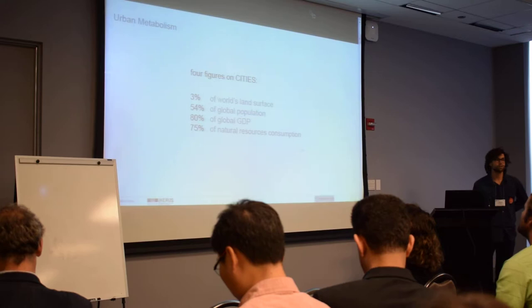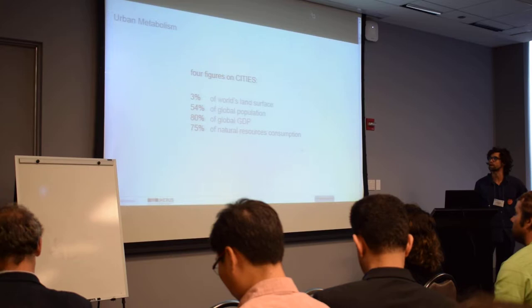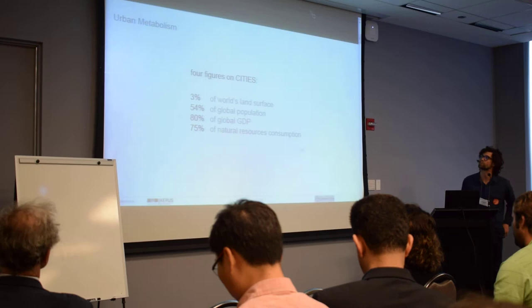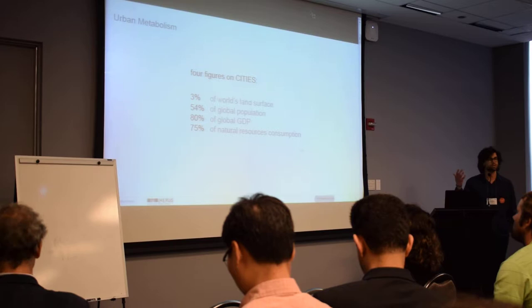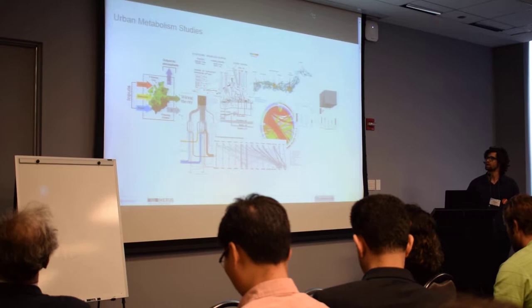I'll start with this four-figure series — I think everybody knows it very well. Cities occupy 3% of the world's land surface. They house some 54% of the global population. At the same time, they produce 80% of global GDP and consume 75% of natural resources. This is raw information just to make sure that this is a very important object to study.